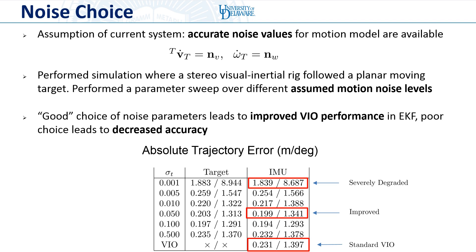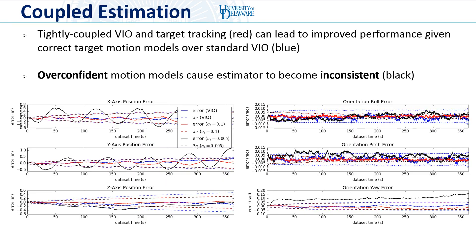However, we can also see the danger of a joint estimator. If the target model is overconfident — that is, noise values are chosen too low and don't reflect the actual reality of the system — we can see severe degradation in the accuracy of both the IMU and target pose. This can be seen clearly in the consistency plots, where we plot the error achieved by an estimator versus the three-sigma bounds. A consistent estimator's errors should stay within these bounds. Compared to VIO alone shown in blue, VIO plus target tracking when using proper noise values, shown in red, is not only consistent but has reduced uncertainty compared to standard VIO. However, if we add an inconsistent model, shown in black, this destroys both the consistency and accuracy of the IMU pose estimation, and will also lead to destruction of the accuracy of the target estimation.